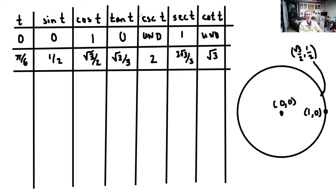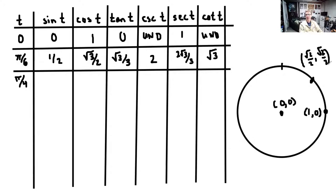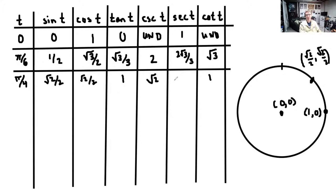Pi over 4 is the next angle. That's where we take π/2 and split it right in half — the nice point where the x and y coordinates are both √2/2. So sine of π/4 is √2/2, cosine of π/4 is √2/2, and since they're equal, tangent and cotangent are both 1. Cosecant and secant are both the reciprocal of √2/2, which is √2.